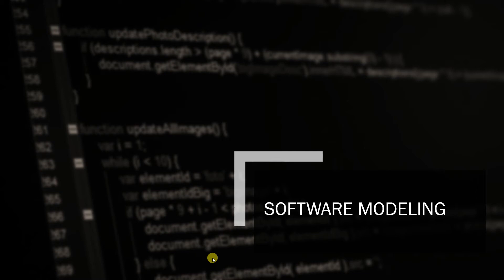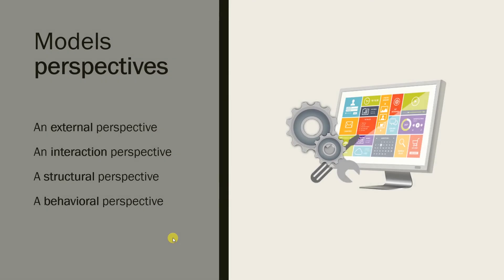Hi guys, welcome to another video. In this video we are focusing on software modeling. Software modeling is the process of developing abstract models of a system, with each model presenting a different view or perspective of that system. It is about representing a system using some kind of graphical notation.